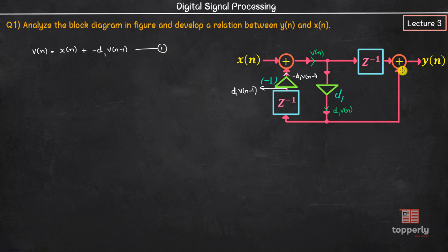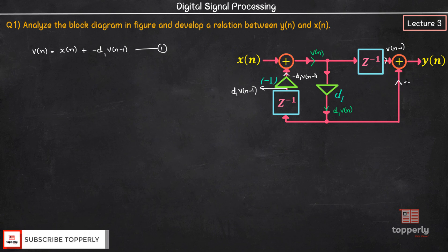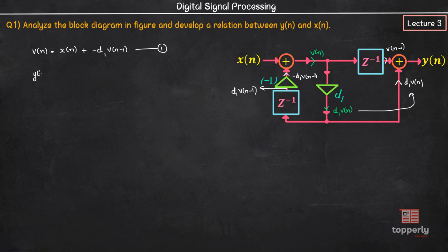Now coming to the second adder circuit: the input at this end is v of n-1 due to the unit delay, and the input at this end is d1 times v of n. So the output y of n will be: y of n = v of n-1 + d1 times v of n. Let us name it as equation number 2.